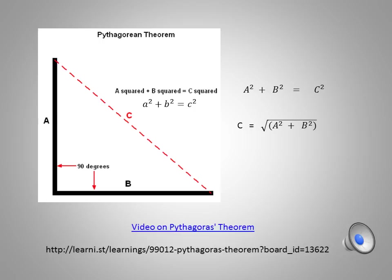A quick review of the Pythagorean theorem will show us what we need to know for roof geometry. Remember, Pythagoras only works for a right-angle triangle, so there has to be 90 degrees. In this triangle, the vertical arm is A, the horizontal arm is B, and the hypotenuse, which is the sloping arm, is C. And A squared plus B squared is equal to C squared.